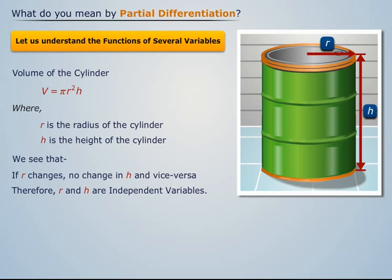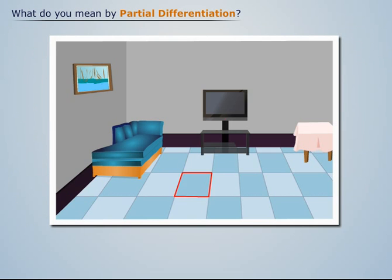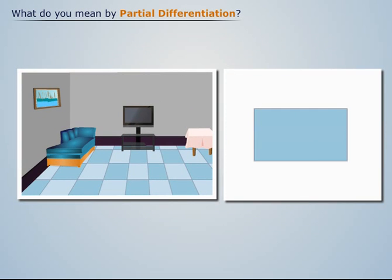Such type of equation which contains more than one independent variable is known as function of several variables. Therefore, V is an example of function of several variables. Now let's consider a rectangular surface of the floor of a room. The area of the surface depends upon its length and breadth.